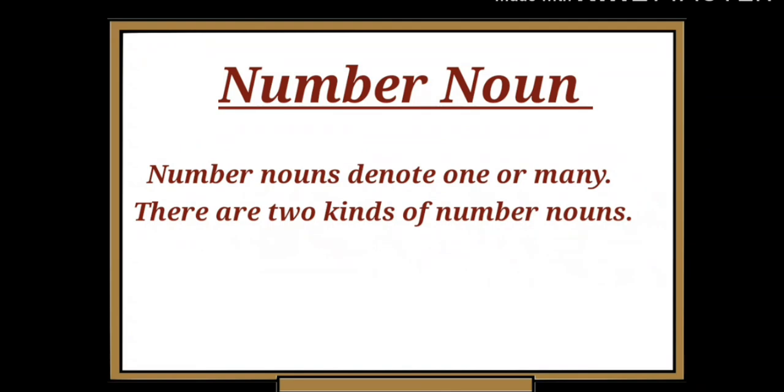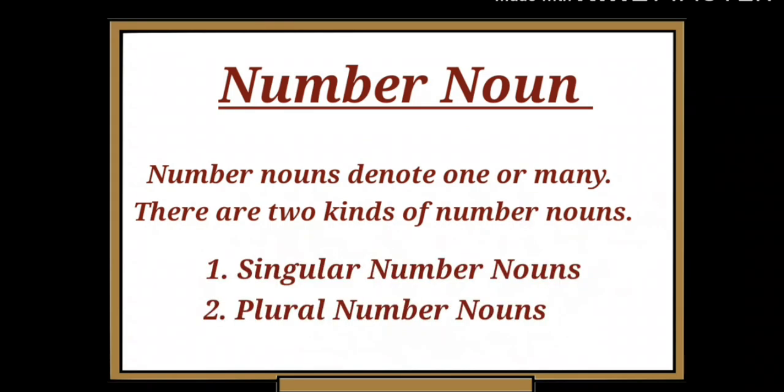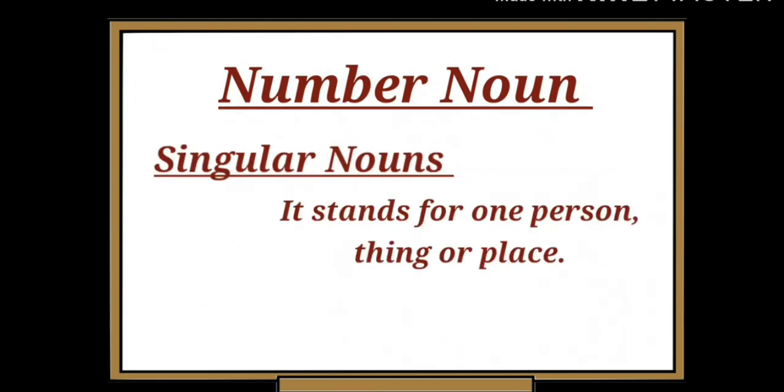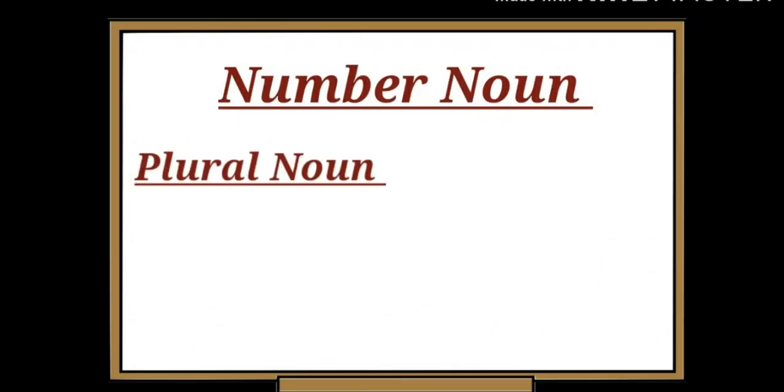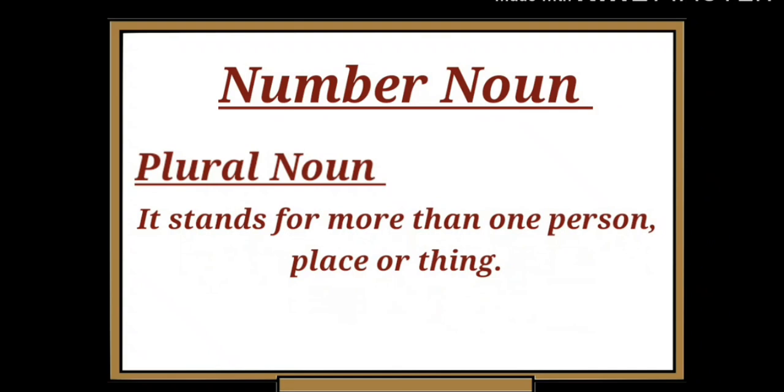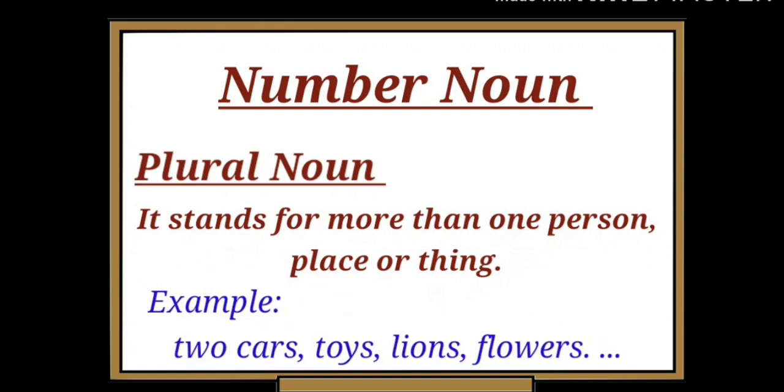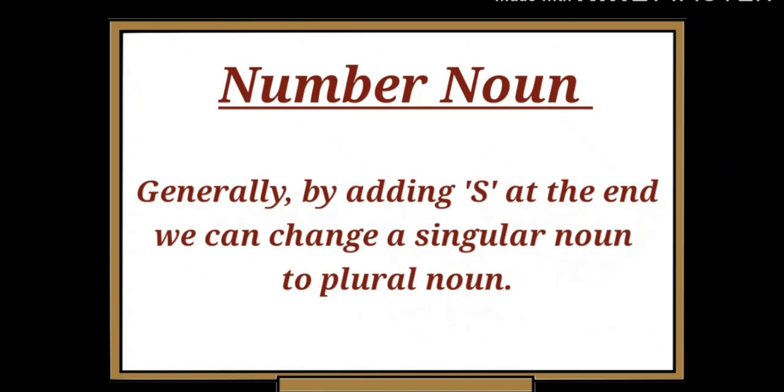We have already seen compound nouns and material nouns. Now let's look onto number nouns. Number nouns denote one or many. There are two kinds: singular number nouns and plural number nouns. Singular number nouns stand for one person, animal, thing, or place. For example: one car, a toy, lion, flower, etc. Plural number nouns stand for more than one. For example: two cars, toys, lions, flowers, etc. Generally, by adding 's' at the end, we can change a singular noun to a plural noun.